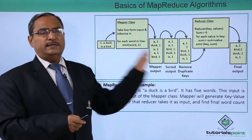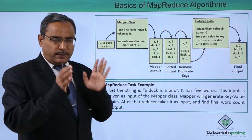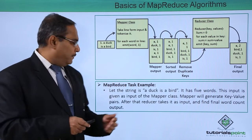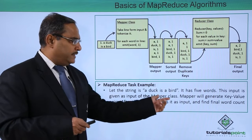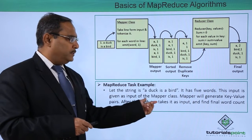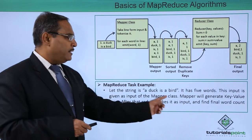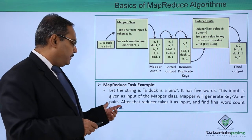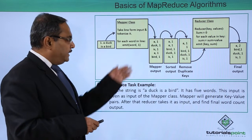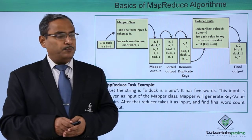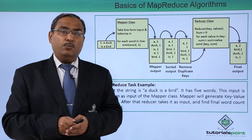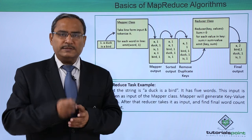From this word count example, it becomes clear what the purpose is and what operations are performed in the mapper class and reducer class. The string 'A duck is a bird' has 5 words. The mapper class generates key-value pairs from the input; the reducer takes those and finds the final word count as output. In this video we have discussed the basics of the MapReduce algorithm with detailed discussion and sample examples.